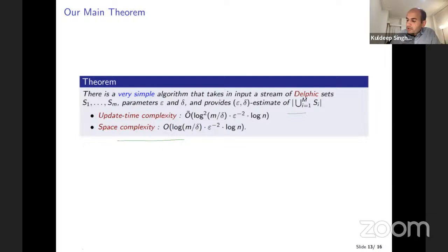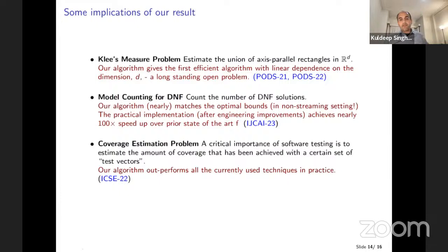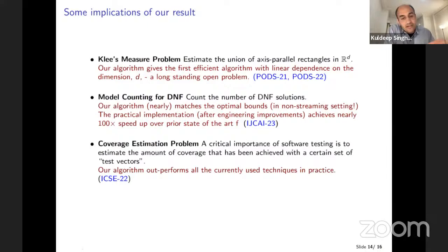I'm going to tell you a very simple algorithm with update time complexity polynomial in log M and log N. For the Klee's measure problem, we get the first efficient algorithm with linear dependence on dimension d. For model counting, we get an algorithm matching optimal bounds in the non-streaming setting. The practical implementation is about 100 times faster than the prior state of the art, because there's a huge difference between an algorithm that must store the entire DNF versus one that can process it without storing it. Similarly for test coverage estimation, we outperform currently used techniques.